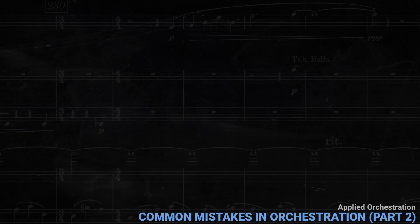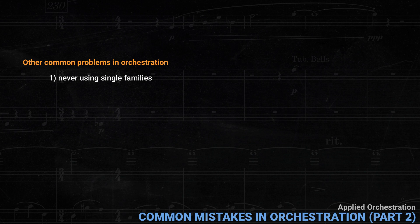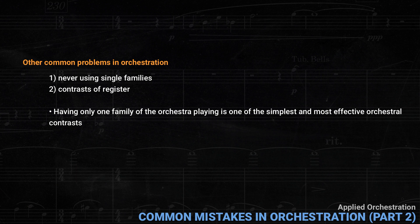Two other common problems I see in beginner's work are never using single families or contrast of register in a longer work. Unfortunately, I can't give examples of these here since they would necessarily be very long. Just remember that having only one family of the orchestra playing, for example, just strings or just brass, is one of the simplest and most effective orchestral contrasts. Changes of register are also simple and very potent.